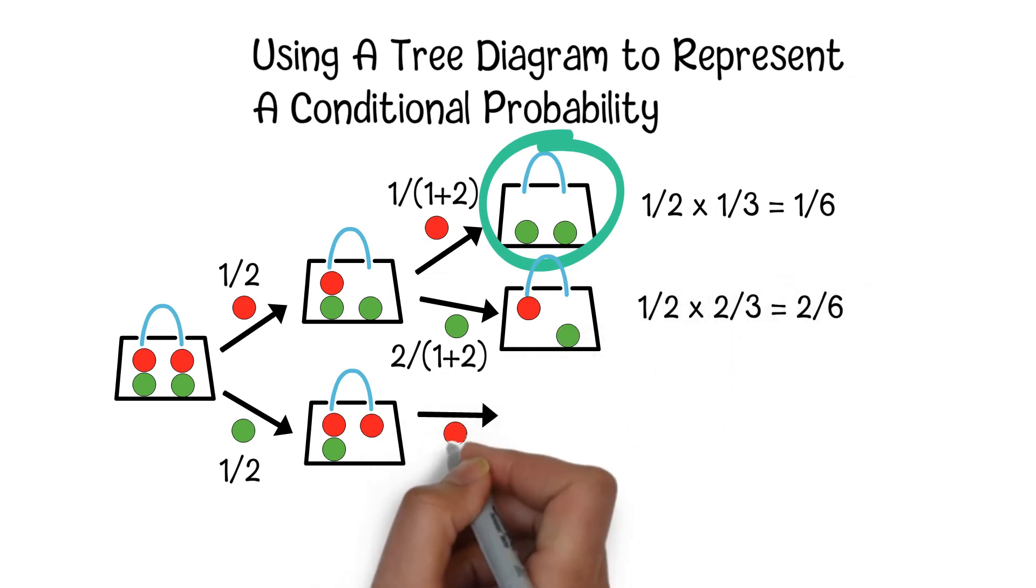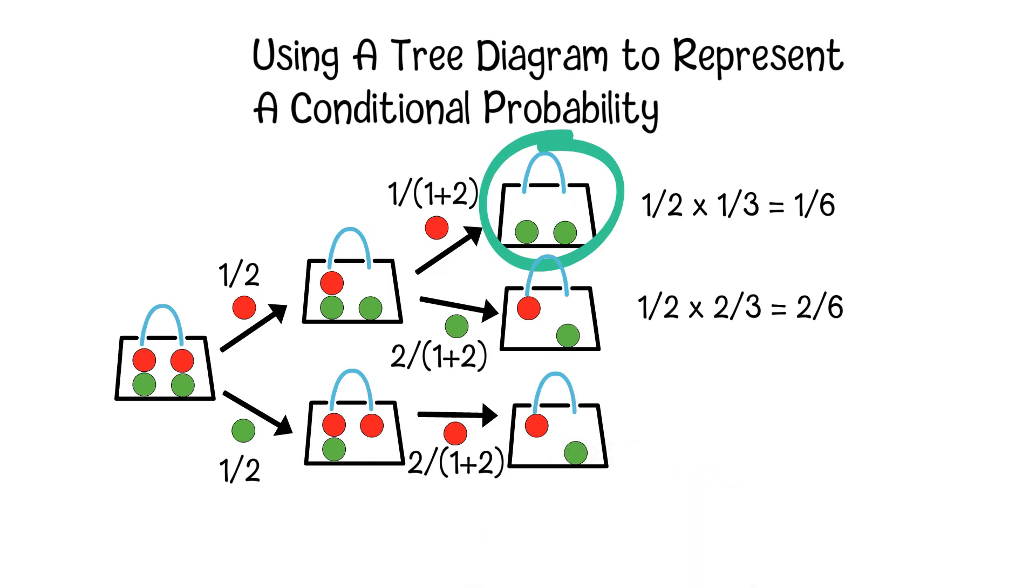To get the final outcome for each branch, we can just multiply all the probabilities along the branches. If we want to get the probabilities of multiple branches, we can just add them together.